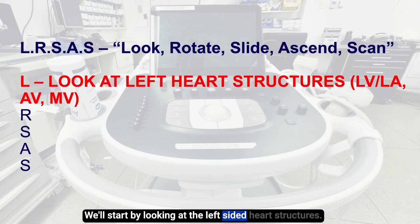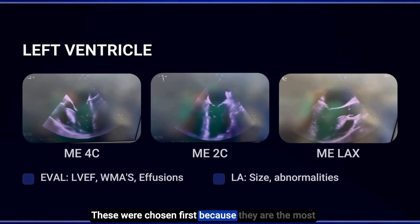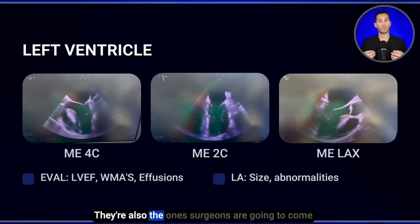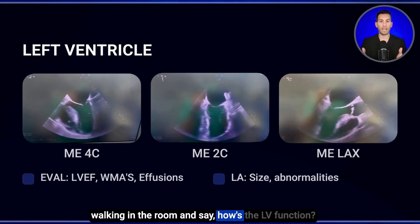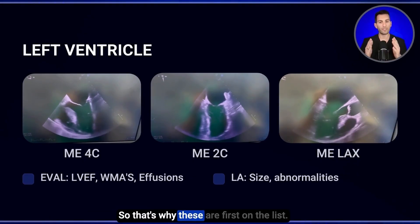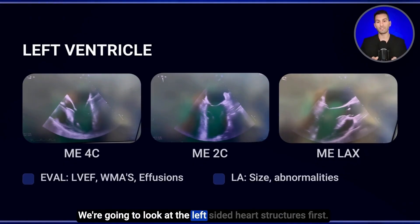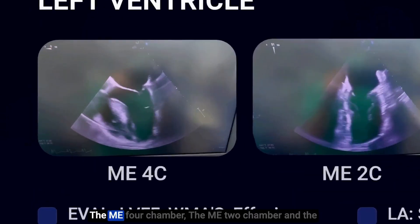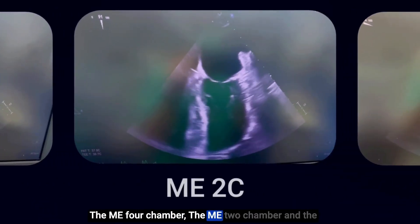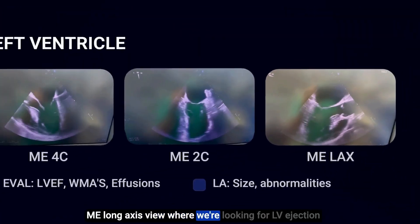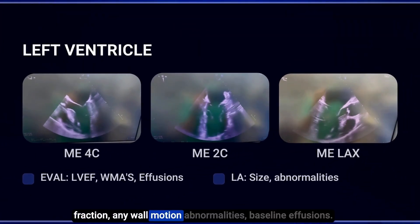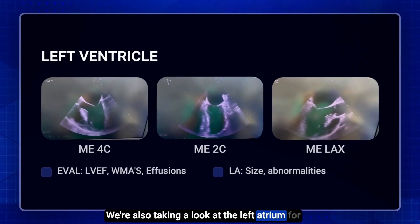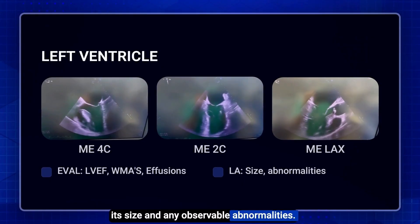We'll start by looking at the left-sided heart structures, which were chosen first because they are the most clinically relevant structures in the vast majority of cases — surgeons will walk in and ask how's the LV function, how's the aortic valve. When we look at the left ventricle, there are three views we look at every time: the midesophageal 4-chamber, the midesophageal 2-chamber, and the midesophageal long axis view, where we're looking for LV ejection fraction, any wall motion abnormalities, and baseline effusions. We're also taking a look at the left atrium for its size and any observable abnormalities.